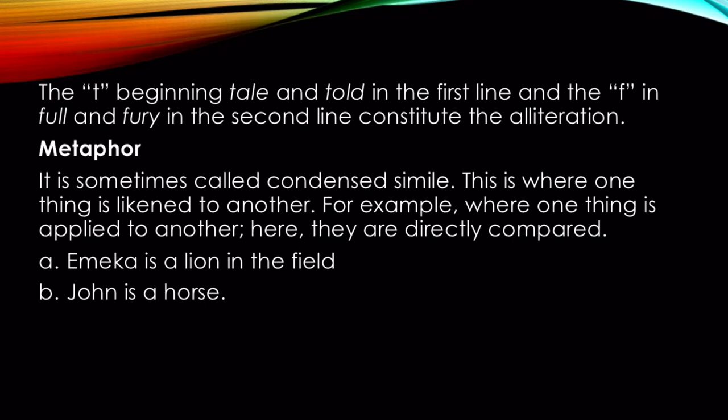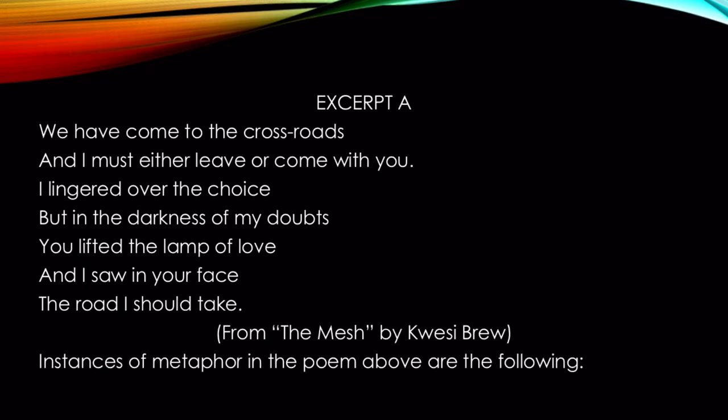Next is metaphor, sometimes called a condensed simile, where one thing is likened to another. Here they are directly compared. For example: 'Emeka is a lion in the field' — meaning Emeka is strong like a lion. Another example: 'John is a horse.' In excerpt A: 'We have come to the crossroads and I must either leave or come with you. I lingered over the choice, but in the darkness of my doubts you lifted the lamp of love, and I saw in your face the road I should take.'